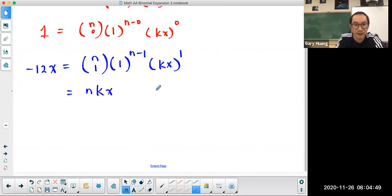So what I have on the right is I'm going to have n times k times x. Now I'm going to cross out the x because the coefficient negative 12 is going to equal to n times k, and that's my first equation. n times k equals negative 12.